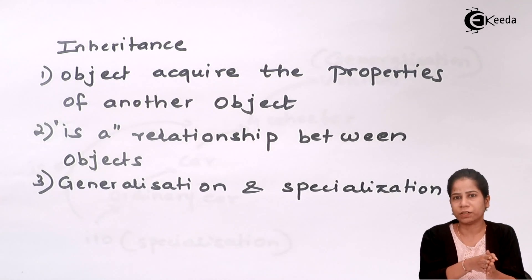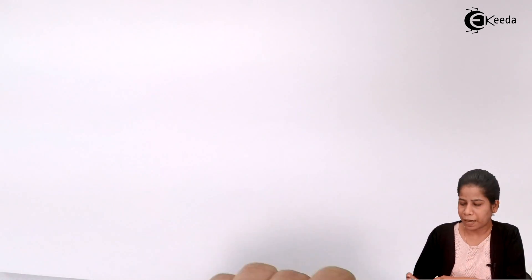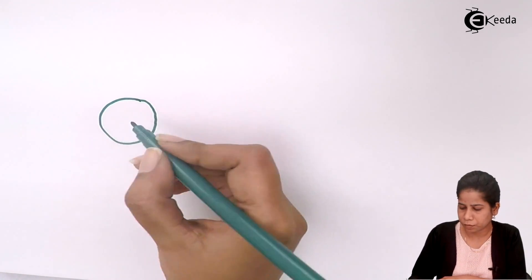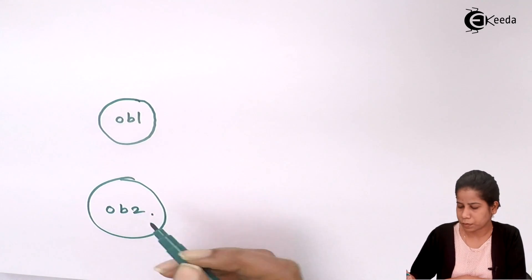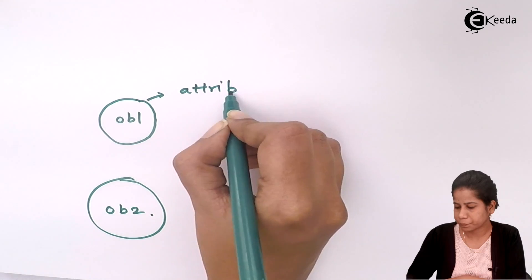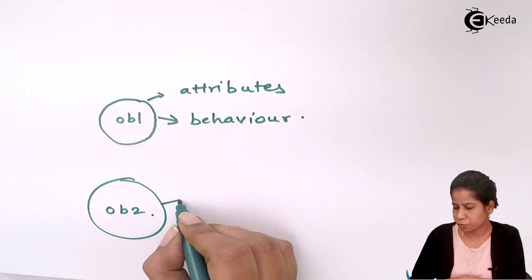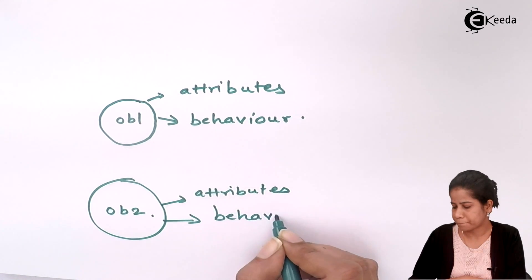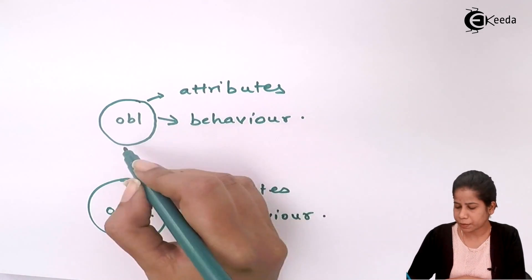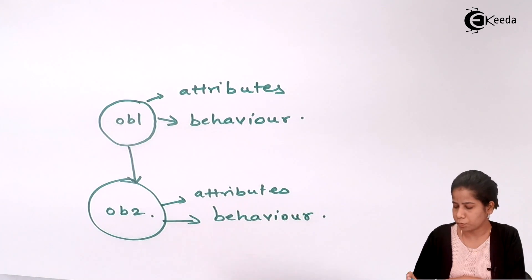Through inheritance, what we are achieving is reusability. Now, if I'm having a particular object ob1 and another object ob2, ob1 is having some attributes and some behavior. ob2 is also having some attributes and some behavior. Now the attributes and behavior of one object or entity I can use in another object, and that is nothing but inheritance.